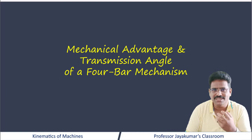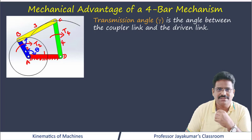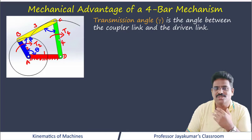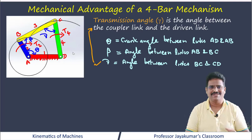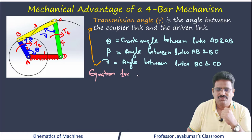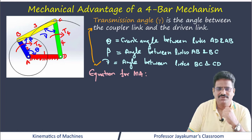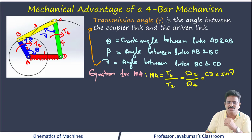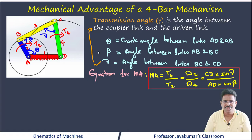Let me introduce a few more notations. Let theta be the angle between the frame and the crank — so theta is the crank angle. Let beta be the angle between the crank input link and the coupler. The angle made by the coupler and the output link — also known as the follower or rocker — is gamma, and that angle is known as the transmission angle. Transmission angle is the angle between the coupler link and the driven link. We can derive an equation for mechanical advantage of the 4-bar mechanism from these definitions.